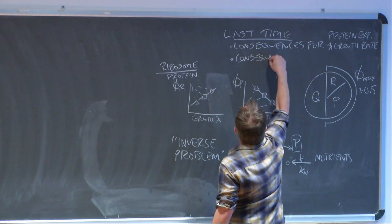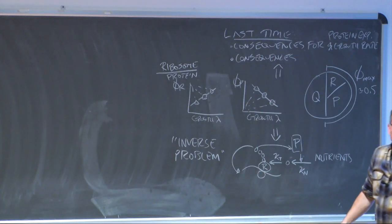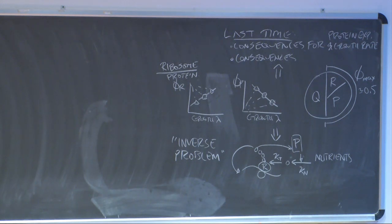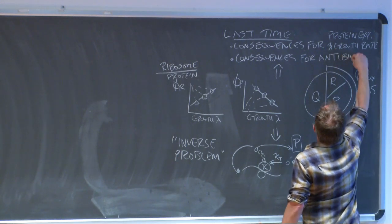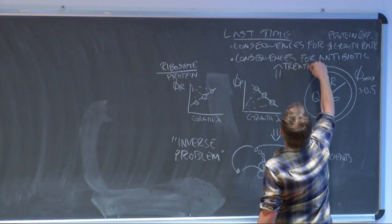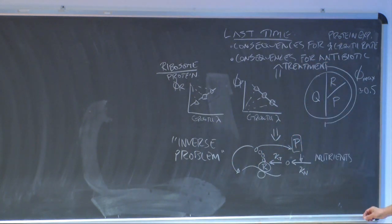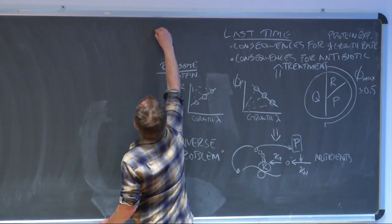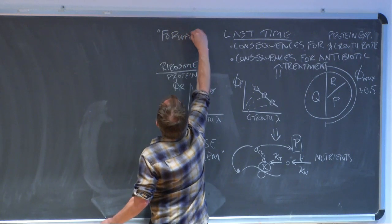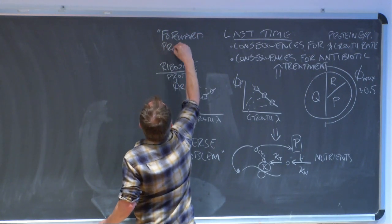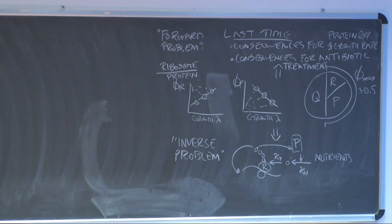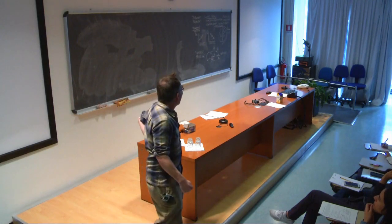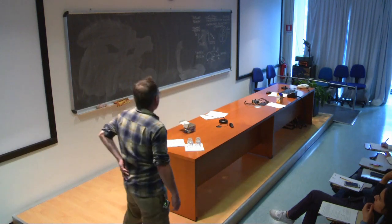Another set of consequences I want to talk about — which we'll get to either later today or definitely tomorrow — is antibiotic susceptibility: consequences for antibiotic treatment. This is a forward problem, and it's much more reliable. We use these empirical constraints and then ask what are the consequences.